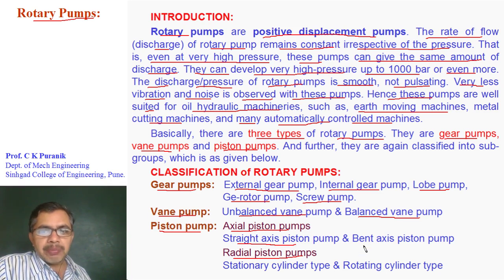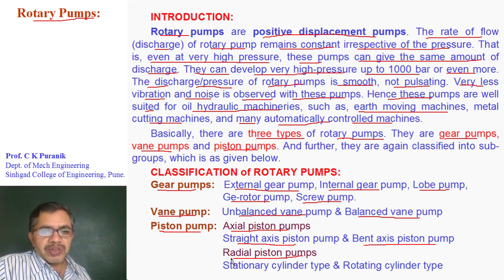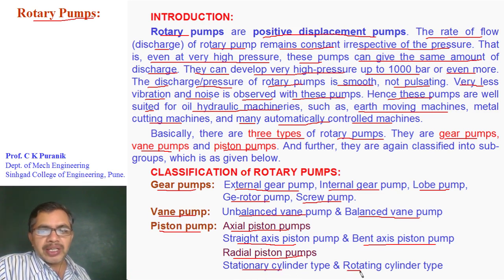There are two types of axial piston pumps: straight axis piston pump and bent axis piston pump. Again, there are two types of radial piston pumps: stationary cylinder radial piston pump and rotating cylinder radial piston pump.